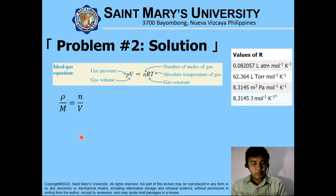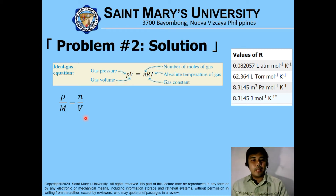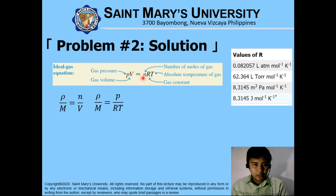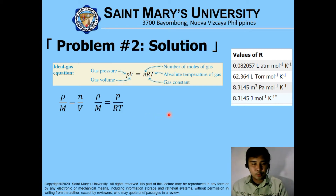We have here the relationship: density over molar mass is equivalent to the number of moles divided by the volume of the gas. Just manipulating the value of N here — N is equivalent to PV over RT. Just plugging in N, so we can actually find the value of P over RT. The V part will cancel out. Therefore, density over the molar mass is equivalent to P over RT. We can relate N over V is equivalent to P over RT.